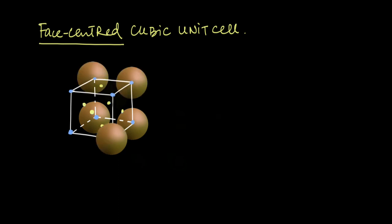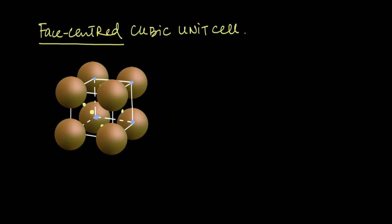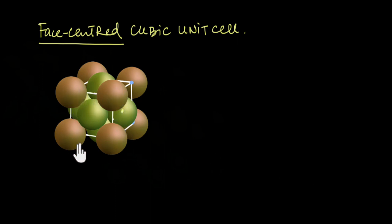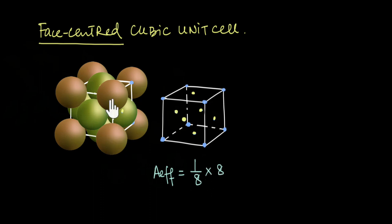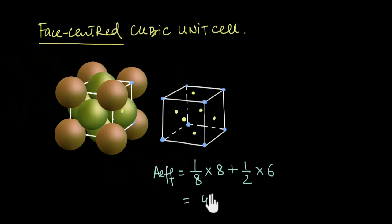Now let's calculate the packing fraction for an FCC arrangement. FCC has atoms not only at the corners but also at the center of each face. All atoms are identical — the face-centered ones are just drawn in green for clarity. For FCC, A_effective = (1/8 × 8) + (1/2 × 6) = 1 + 3 = 4.